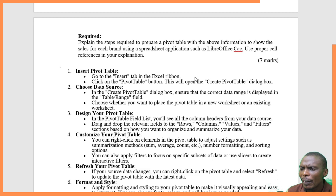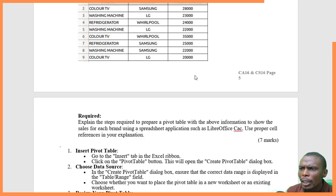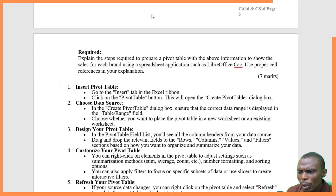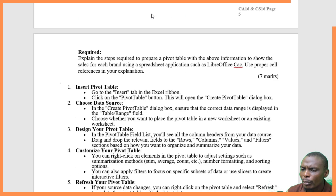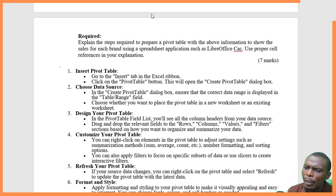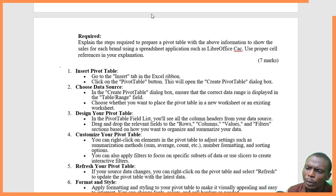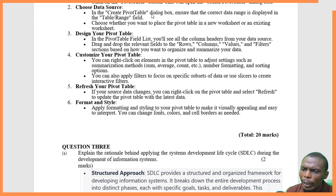In our case we have columns: item, brand, and sales. These columns will have values and filters. We drag the fields we want — for example Samsung or LG — and pull them after the dropdown arrows have appeared for the column headers. You can then customize your pivot table by right-clicking on elements to adjust settings, such as choosing to sum, average, or count. When you refresh your pivot table, you will find the changes reflected in your data source.